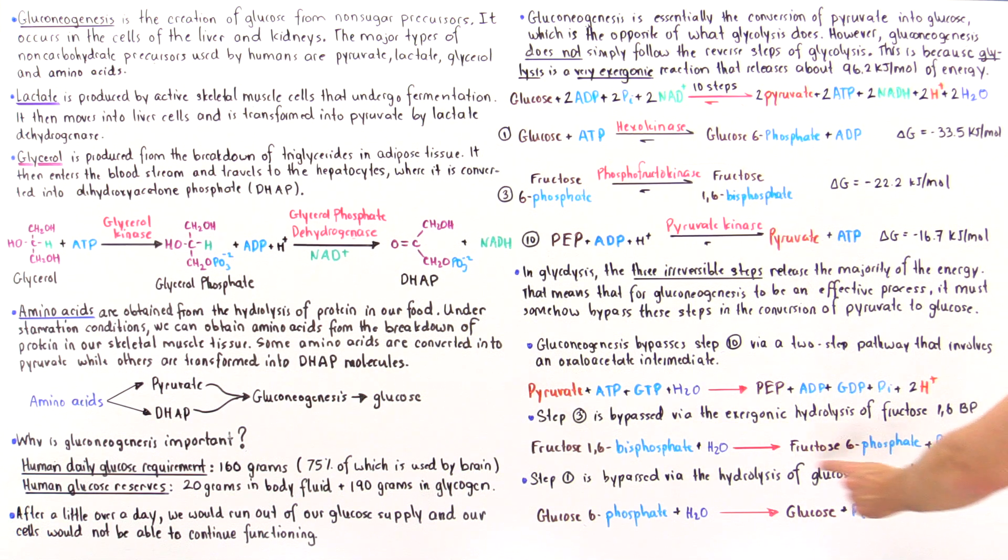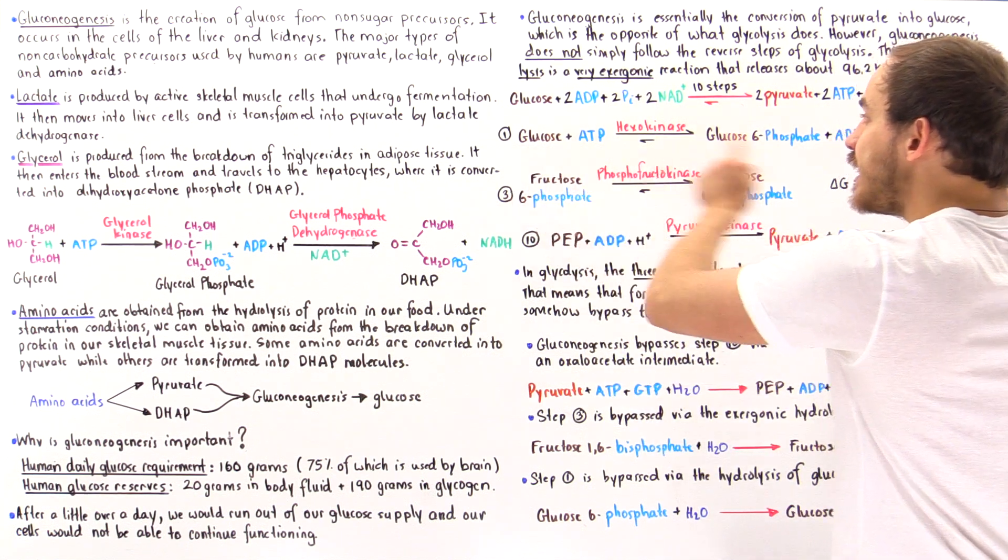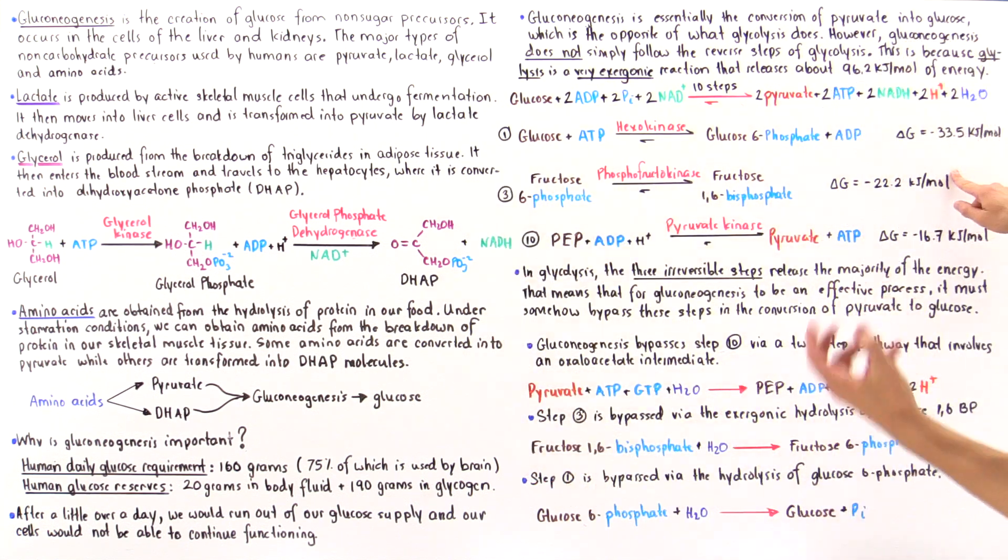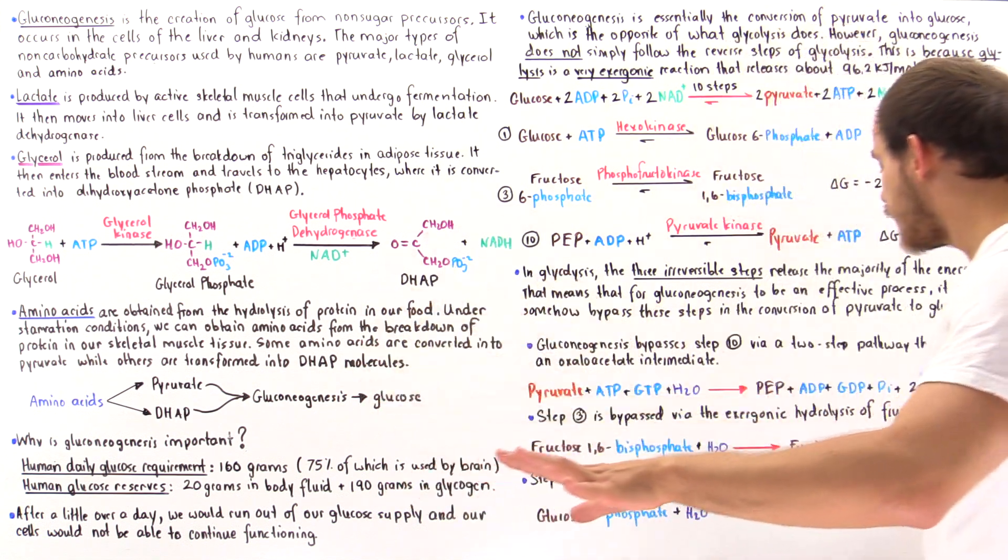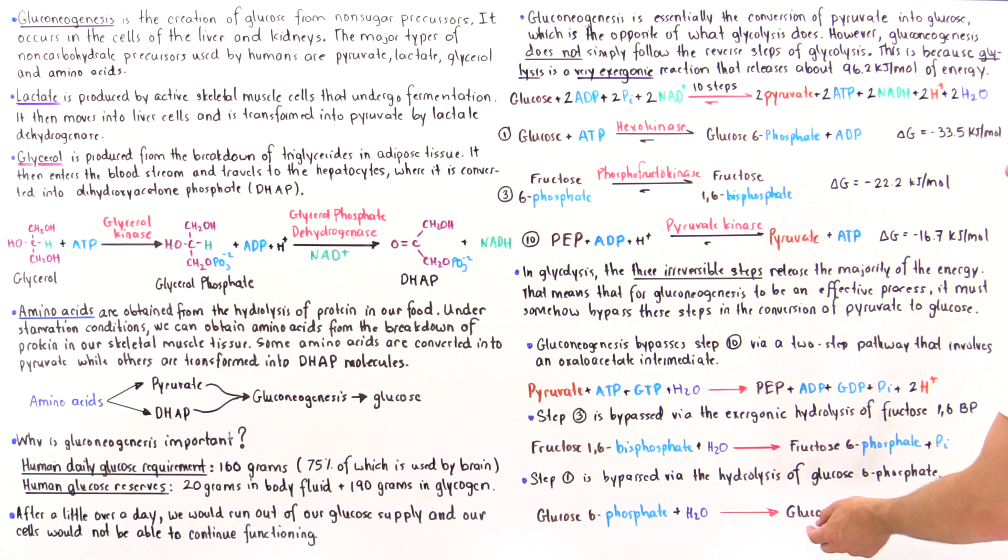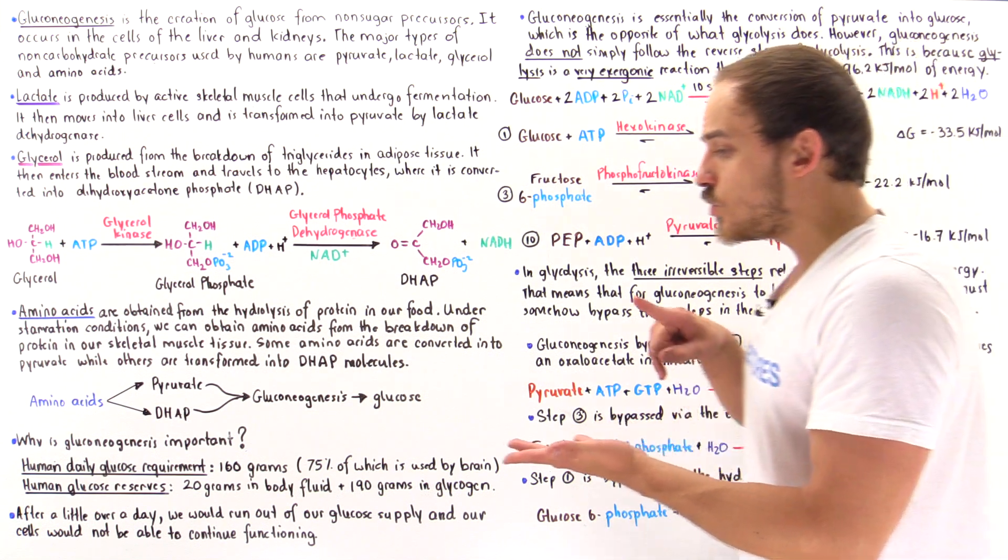And step 1 is bypassed by another hydrolysis reaction that is catalyzed by a different enzyme to form that glucose molecule. So once again, gluconeogenesis is not simply the reverse of glycolysis...